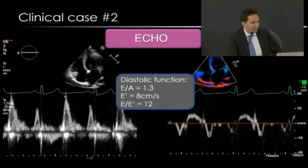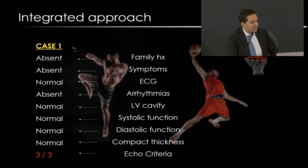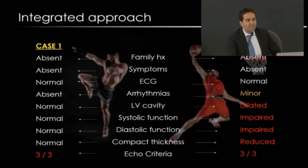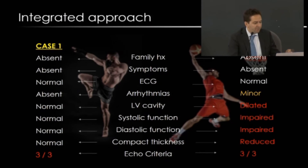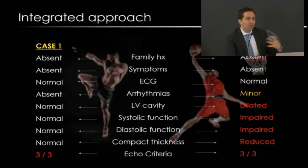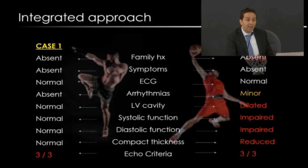Comparing the two athletes using an integrated approach: case one had absent family history, no symptoms, normal ECG, no arrhythmias, normal LV cavity, normal systolic and diastolic function, and non-thin compact layer. Case two had absent family history and no symptoms, but had LV-origin arrhythmias, a dilated LV cavity, impaired systolic function, impaired diastolic function, and a reduced compact layer thickness. Despite both athletes having positive echocardiographic criteria, case two had several features suggesting cardiomyopathy, and for this reason was disqualified from training and competition.